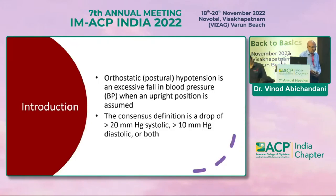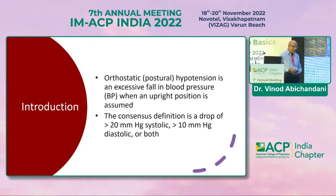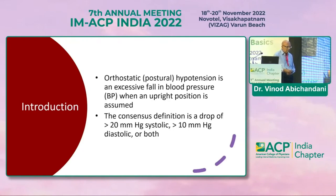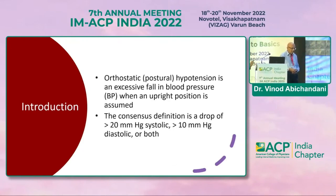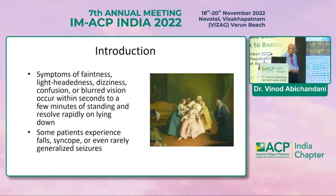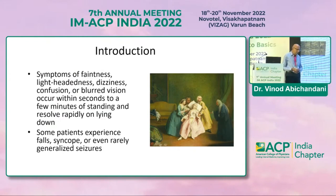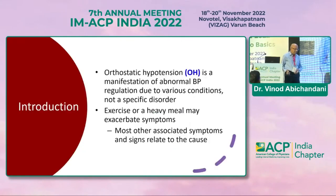Orthostatic or postural hypotension is an excessive fall in blood pressure when an upright position is assumed. The consensus definition is a drop of more than 20 mmHg systolic or more than 10 mmHg diastolic, or both. Symptoms of faintness, lightheadedness, dizziness, confusion, or blurred vision occur within seconds to a few minutes of standing and resolve rapidly on lying down.